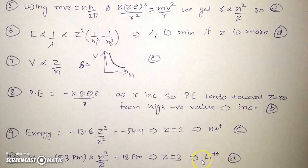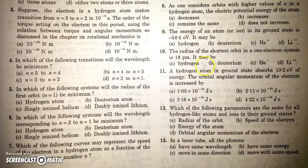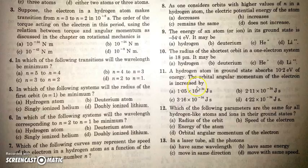So z is 3 and the atom will be or the ion will be lithium 2 plus. If a hydrogen atom in ground states absorb this much energy 10.2 again this value correspond to a transition from n equal to 1 to n equal to 2. So how much orbital angular momentum of the electron will be changed or will be increased by.